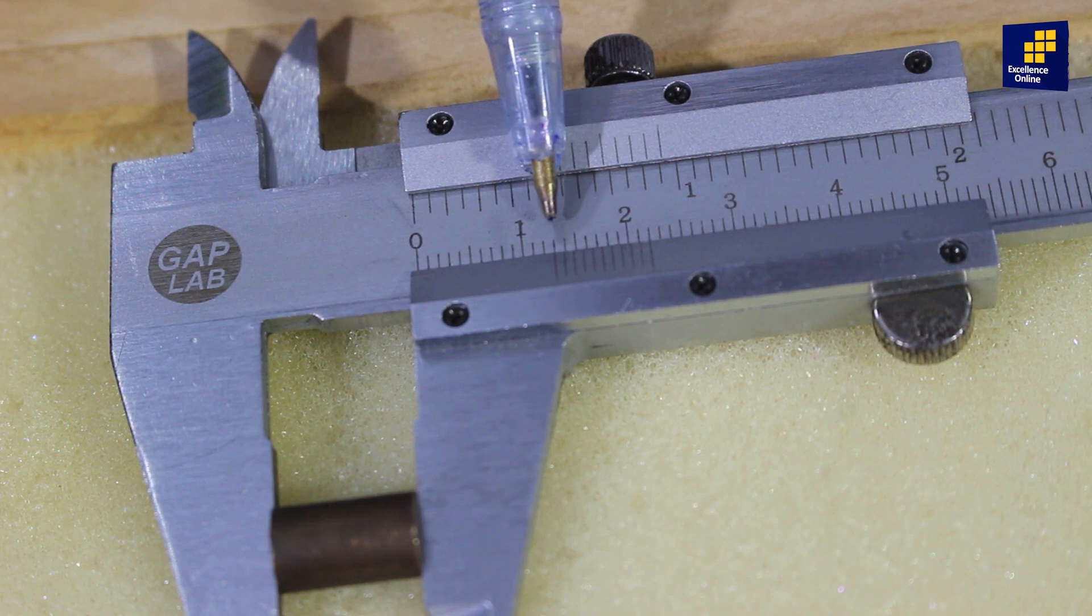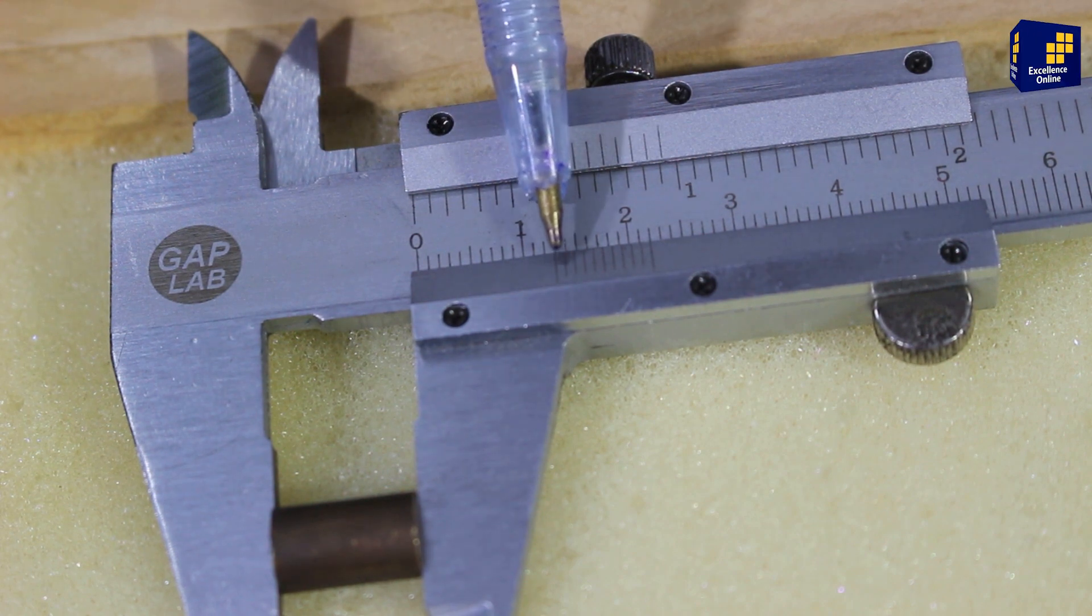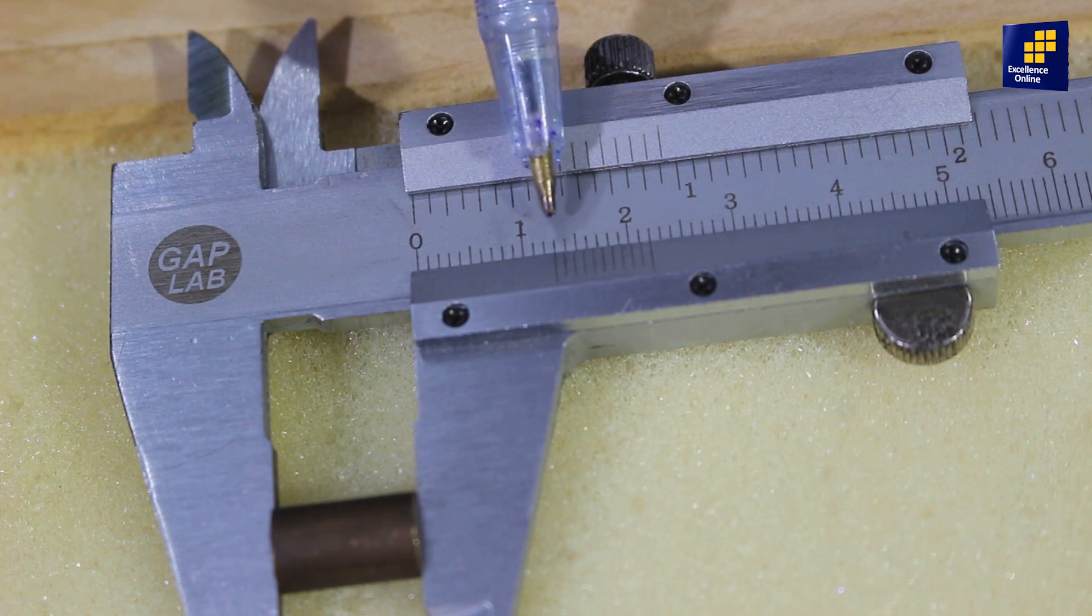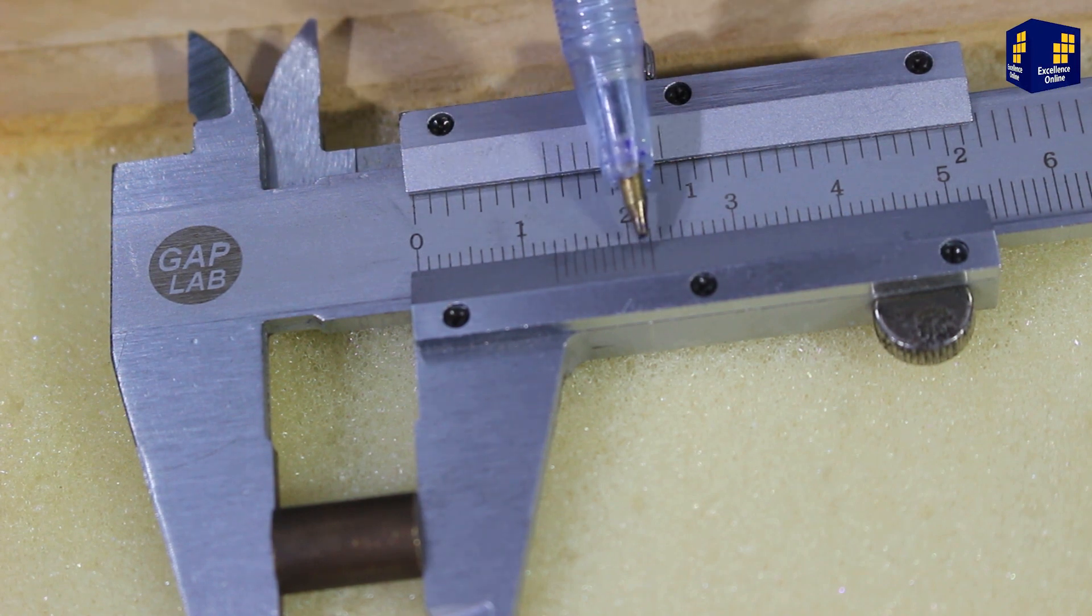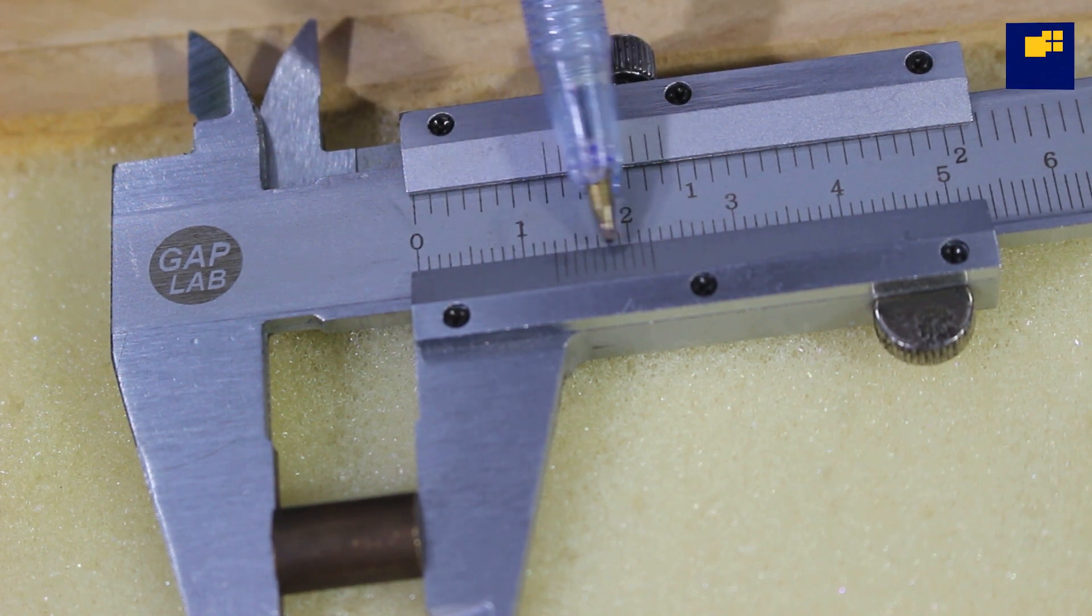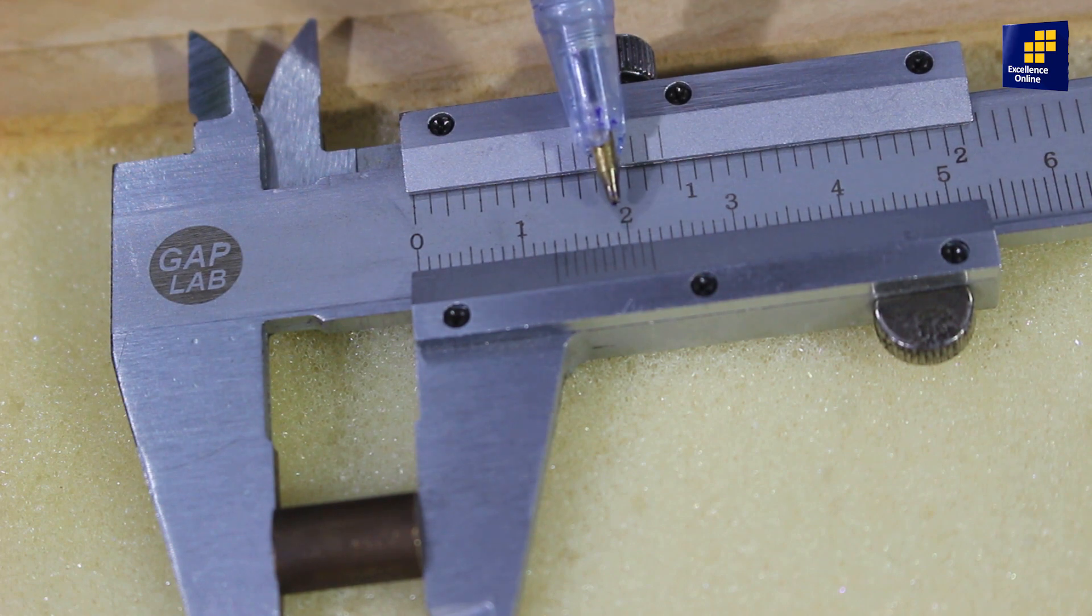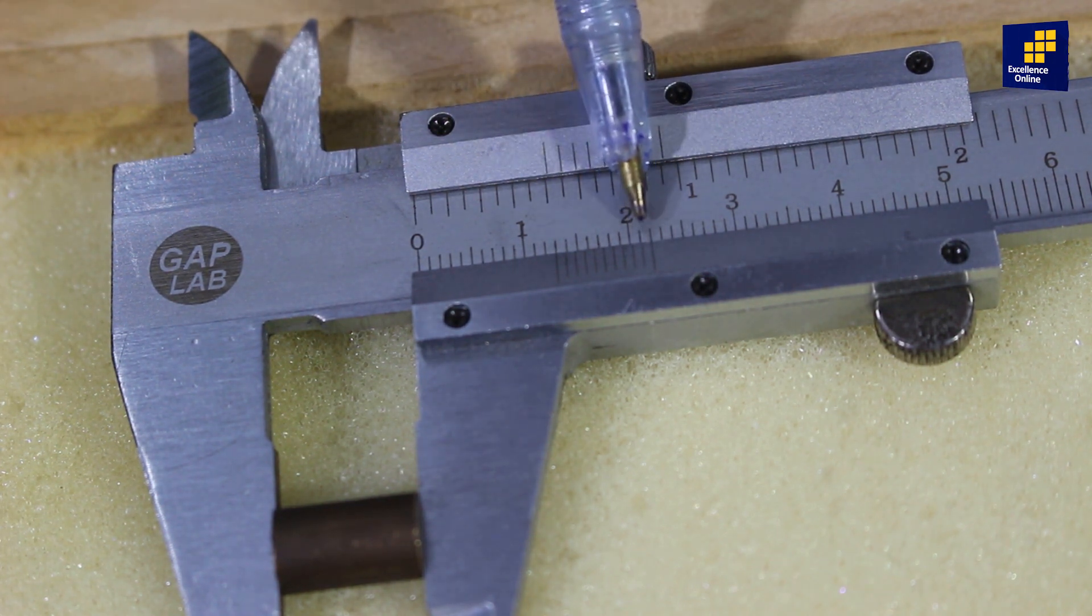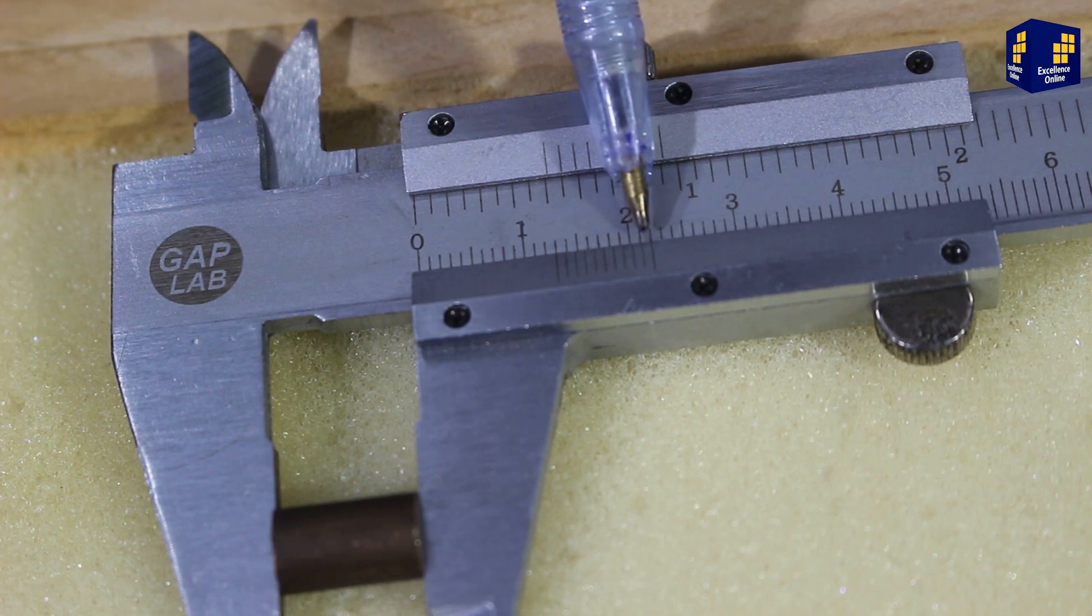अब यहाँ यह जो 1.3 cm है, यह vernier scale zero के just left पर है, coincide तो नहीं कर रहा, so main scale reading will be 1.3 cm. और vernier scale reading के लिए हम देखेंगे which division of vernier scale exactly coincides with the main scale division. तो यहाँ 9th division of the vernier scale is coinciding with the main scale division.